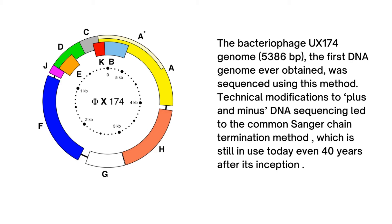The bacteriophage φX174 genome, 5386 bp, the first DNA genome ever obtained, was sequenced using this method. Technical modifications to plus and minus DNA sequencing led to the common Sanger chain termination method, which is still in use today, even 40 years after its inception.